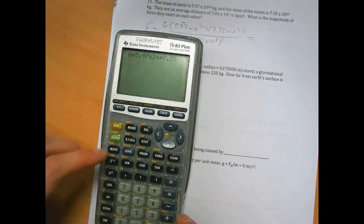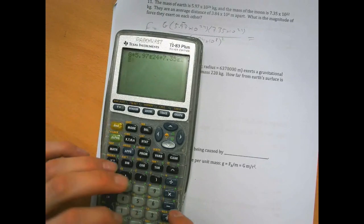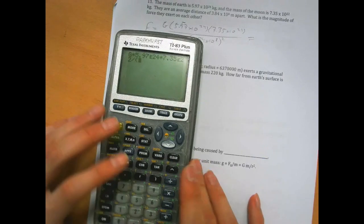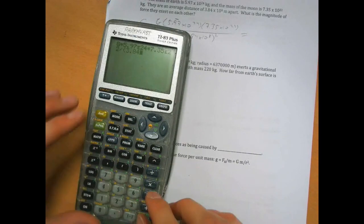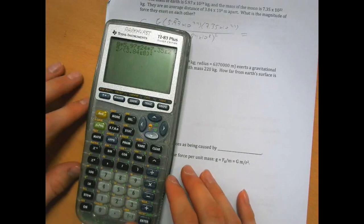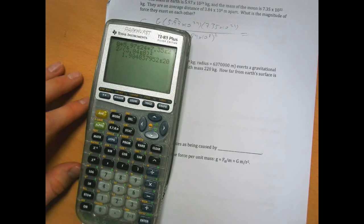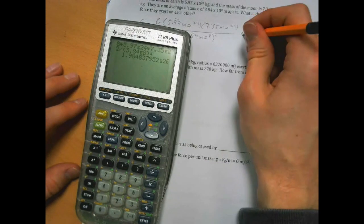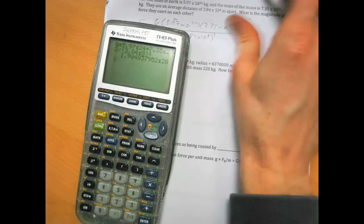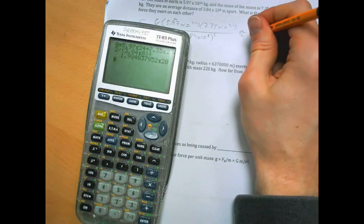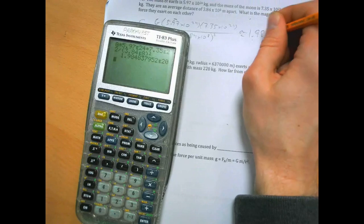I don't remember where that button is on the 89, so you'll have to find it. If I type all that in, which I can do like that, it comes out to, all these values have three sigfigs, and we're just multiplying, so that's 1.98 times 10 to the 20th.